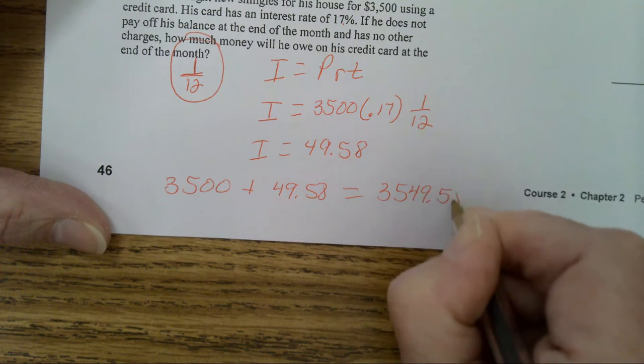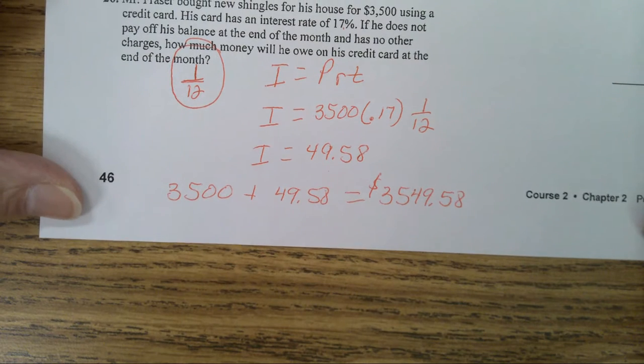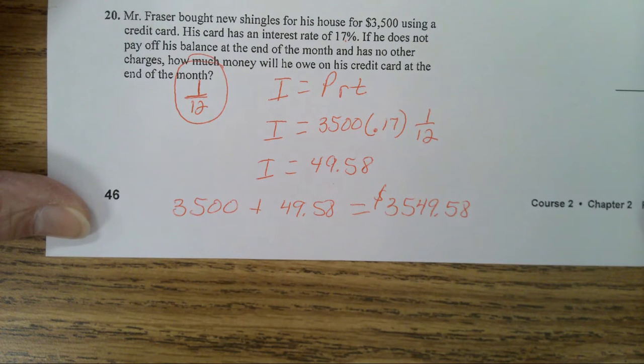When you multiply $3,500 times 0.17 times 1 divided by 12, that gives you $49.58. So after one month he will owe the credit card company - this is what's tricky - it's $3,500 plus $49.58. So on his credit card bill it'll be $3,549.58. You have to add your interest to the amount that he put on the card. Now imagine if he waits another month, instead of $3,500 in two months it'll be up to over $3,600. So it adds up quickly, that's why you want to pay your credit cards off.